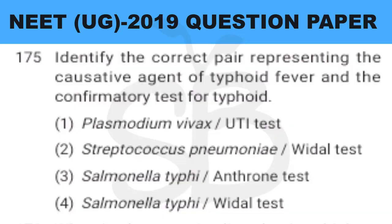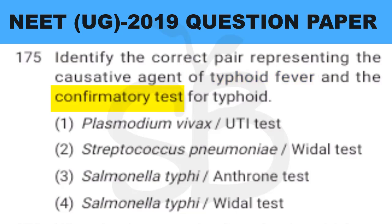Question number 175: identify the correct pair representing the causative agent of typhoid fever and the confirmatory test for typhoid.